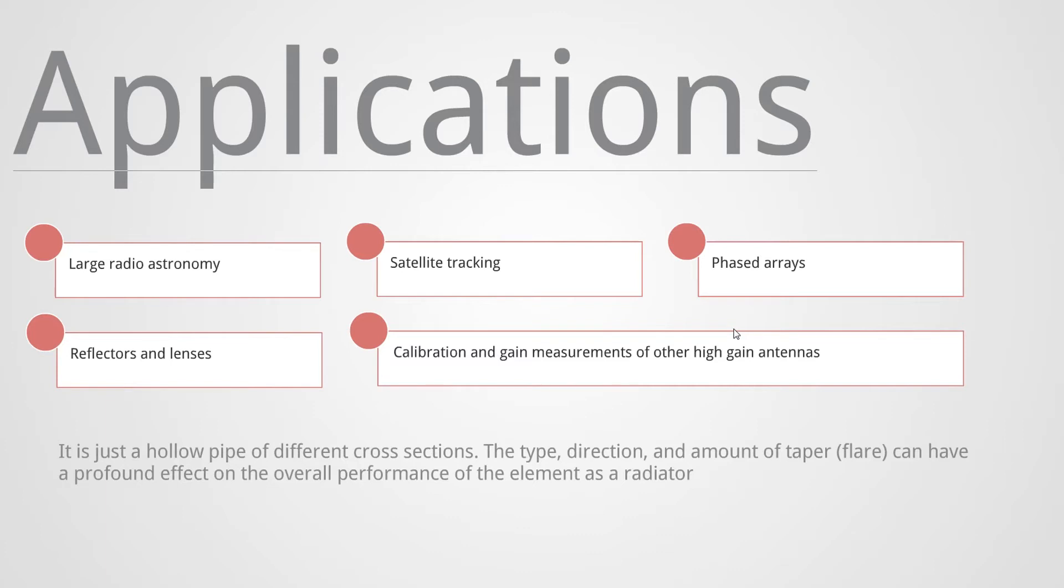And for that, firstly we are going to make a general definition of a horn antenna. It could be like just a hollow pipe of different cross sections. The type, direction, and the amount of taper—in this case flare—can have a profound effect on the overall performance of the element as a radiator. And this definition, as you can see, is related with all the concepts that we defined and commented before.